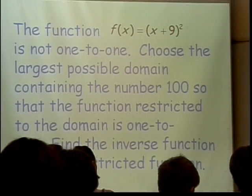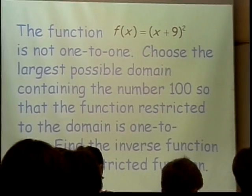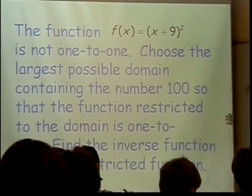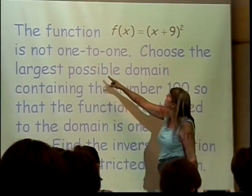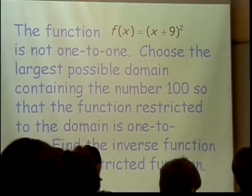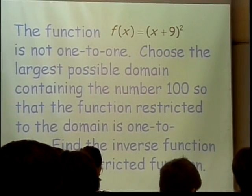Now if you're looking at this graph, there are lots of places you can lop it off. And what's left, what you decide to keep, would be one-to-one. But what we said in here is choose the largest possible domain. So what would be the largest possible amount of things? Where should I cut it off in order to keep the biggest part of the graph?